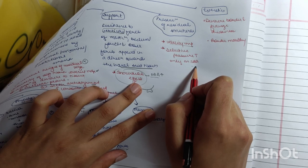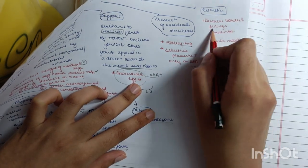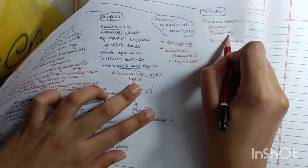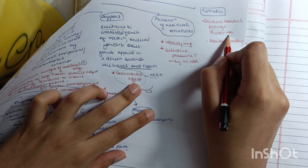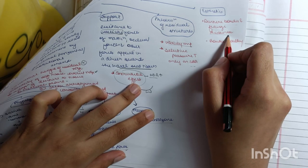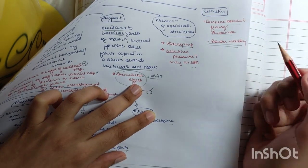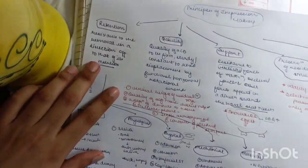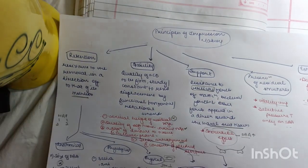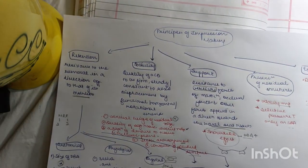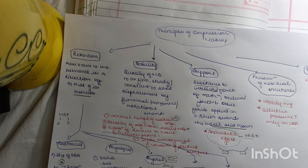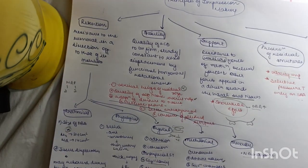Aesthetics: denture border and flange thickness. If we increase the denture border and flange thickness or we decrease it, it will highly affect the aesthetics. Border molding is the step which basically decides the aesthetics. So these are the principles of impression making. I hope I made it easier for you to understand, and if you liked the video do subscribe to my channel. Thanks for watching.